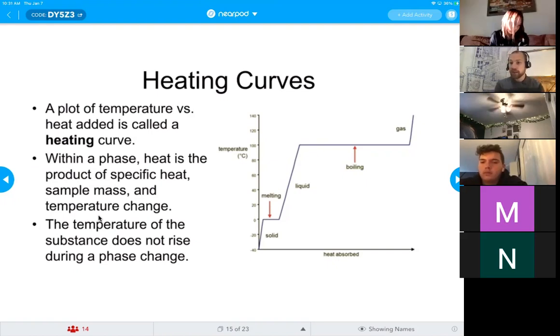If we have a solid, we can increase the speed of vibration by adding energy. But as that solid starts to melt and become a liquid, that energy, instead of going into increasing the vibration, will instead go into breaking those vibrations and breaking individual particles away and forming a liquid.